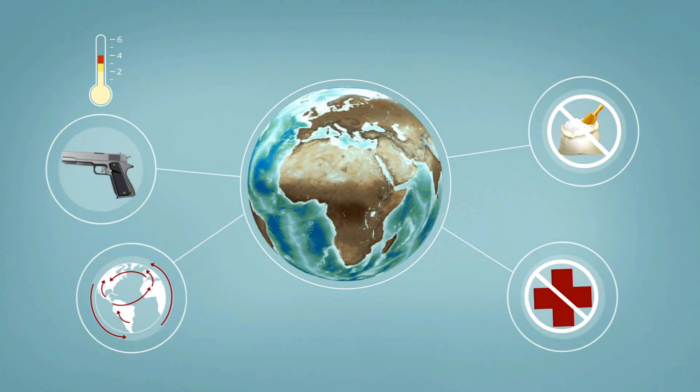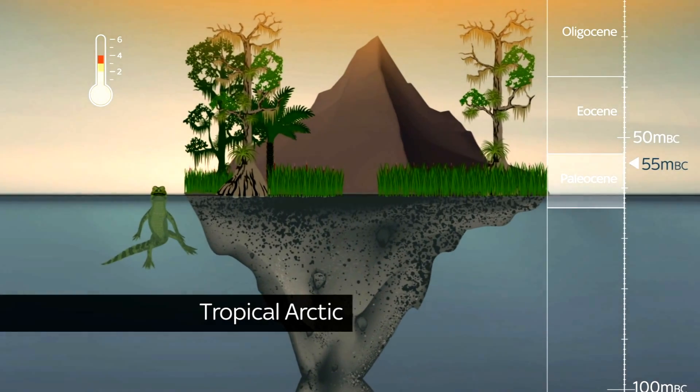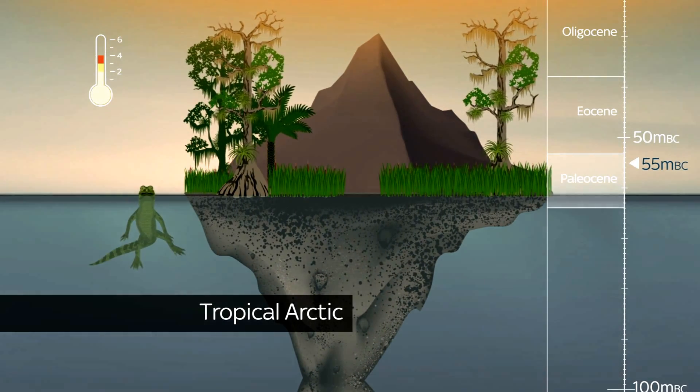When temperatures were last at this level 55 million years ago, alligators lived in the Arctic, Spain was a desert, and mangroves grew in England.